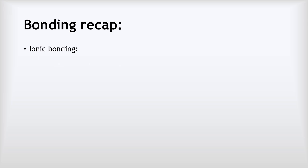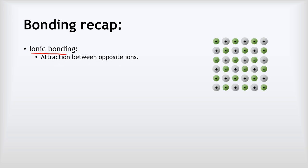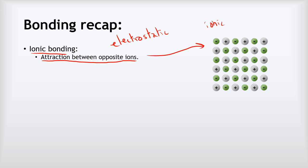Let's recap what we already know about bonding. Our first kind is ionic bonding. The ionic bond is the electrostatic attraction between opposite ions, and that gives us this structure here which we call an ionic lattice. This is a repeating 3D pattern of negative, positive, negative, positive ions in three dimensions, with really strong forces between the ions holding each one in place. That means ionic substances have a really high melting point because it takes a lot of energy to break those strong electrostatic forces.